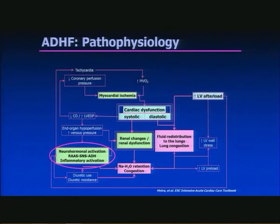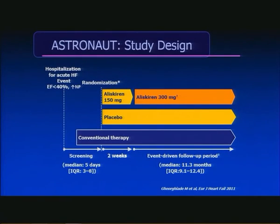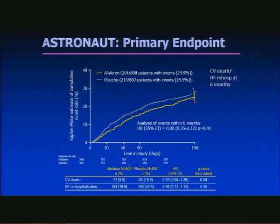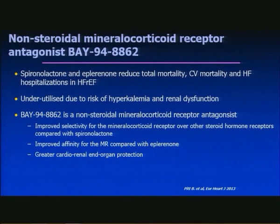Looking at neurohormonal activation: with A2 antagonists or ACE inhibitors there is renin escape, but blocking renin higher up in the cascade has potential to reduce this. The ASTRONAUT study looked at aliskiren 300 mg versus placebo, with outcomes being negative — a non-significant reduction in cardiovascular death, heart failure, and rehospitalisation at six months — along with significant safety concerns: increased hyperkalemia, increased renal impairment or renal failure, and increased hypotension.